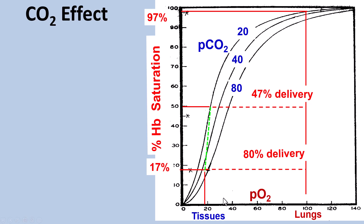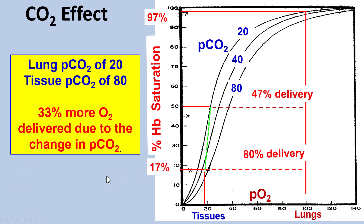The CO2 effect can be seen in PCO2 levels. Out in the lungs we have very low PCO2 because we're constantly exhaling CO2. Out in the tissues we have a high PCO2 because we're constantly making CO2. This change gives about 33% better delivery of oxygen because of this PCO2 difference.